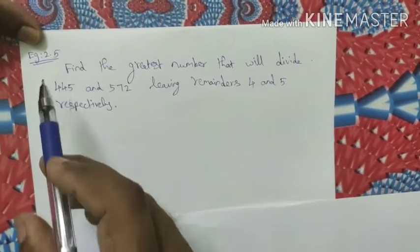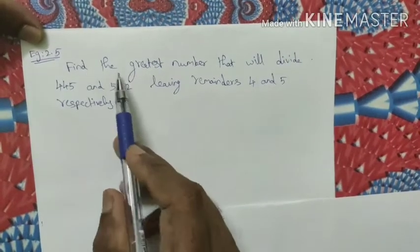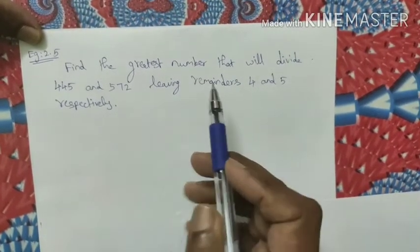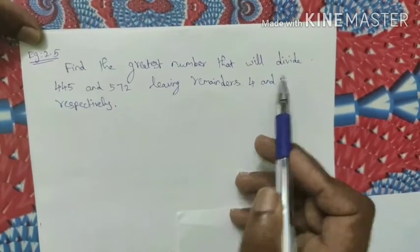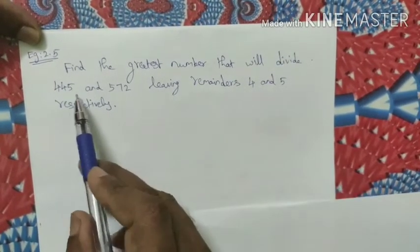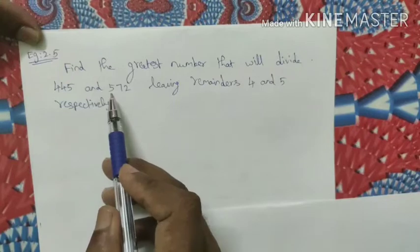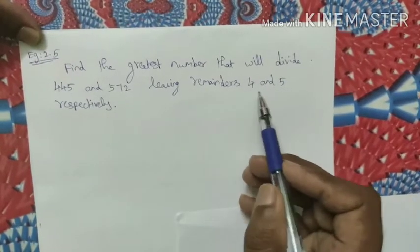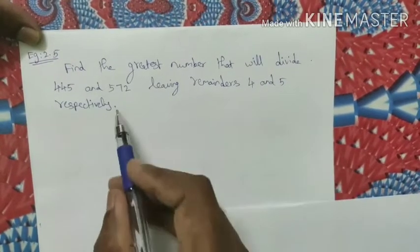Next, example sum 2.5: Find the greatest number that will divide 445 and 572, leaving the remainder 4 and 5 respectively.